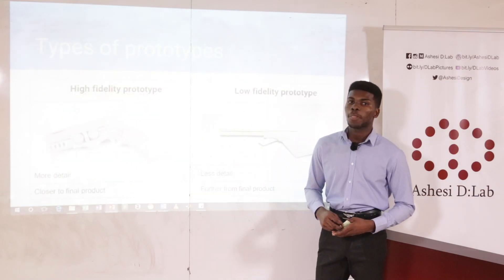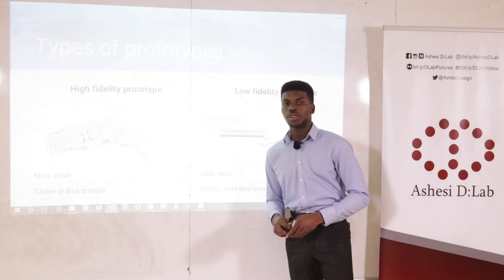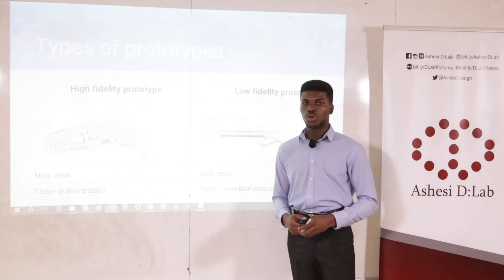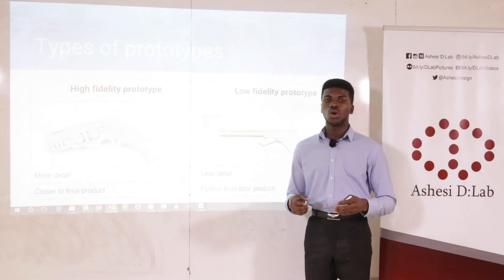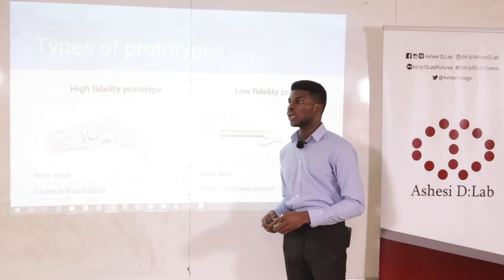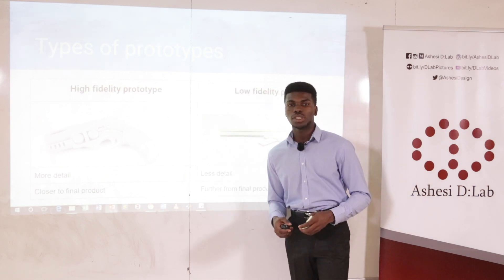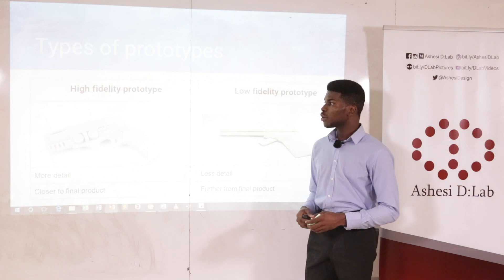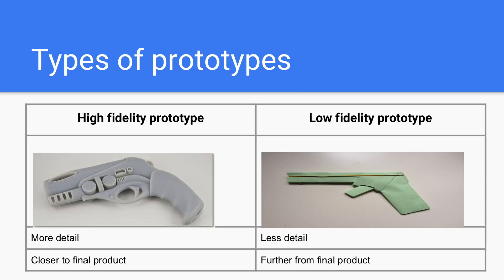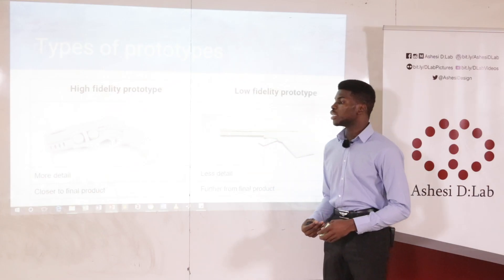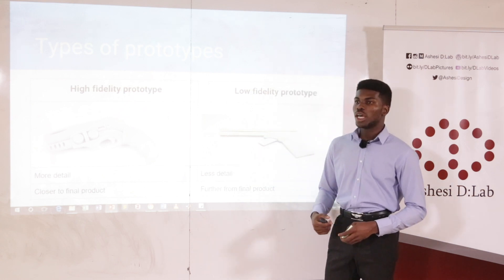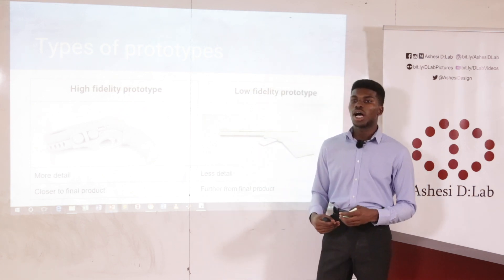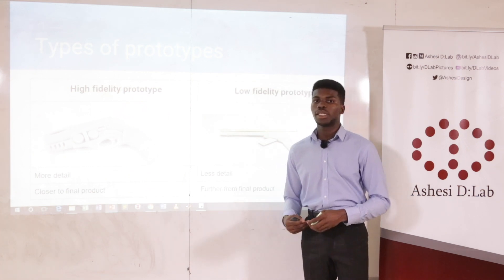Moving on to types of prototype — consider the making of a movie. First of all, we have a teaser and a trailer. The teaser is short and less detailed because it does not capture the whole idea or scene of the movie, as compared to the trailer which gives you the setting, the plot, and so on. We have two types of prototype: high fidelity prototype and low fidelity prototype. With the high fidelity prototype, it's more detailed and so close to the actual product you want to produce. For the low fidelity prototype, it is not as much the actual product, but it looks like it.